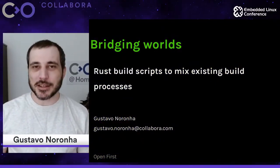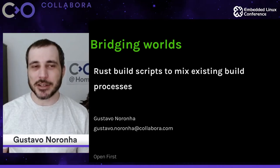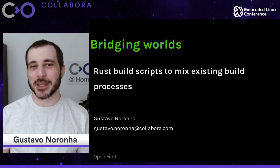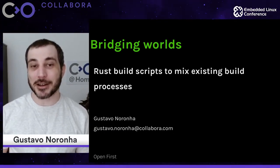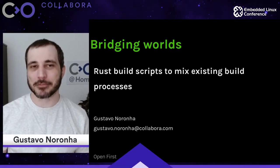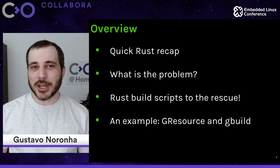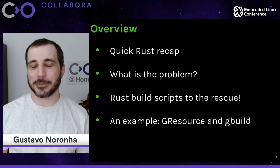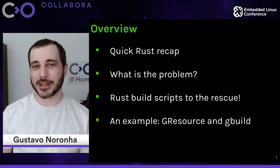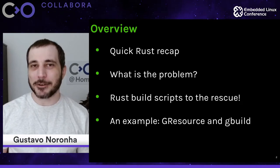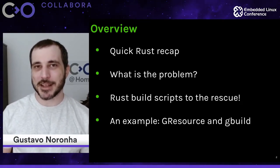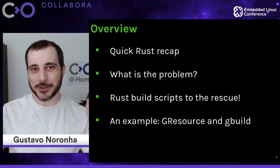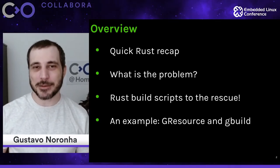I've been trying Rust for a while. Two years ago I started learning, gave up after fighting a lot with the borrow checker. Last year I decided to try it again and I've been in love with it since then. I'd like to go over a quick recap of what Rust is and how it can help us, what problem we're trying to solve with the Rust build system, and how Rust build scripts help us fix that problem. I'll give you an example using GResource and a crate that I built for it.